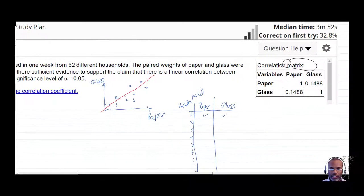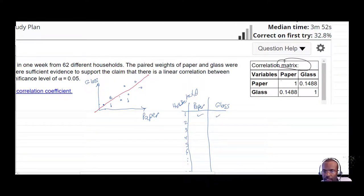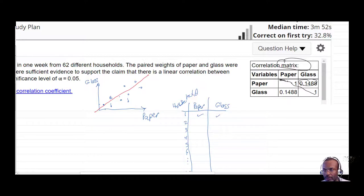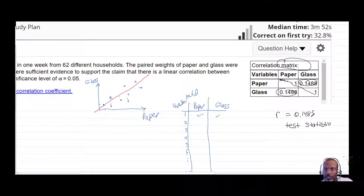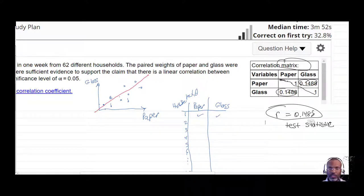All of that is just to say that the weights for paper will always correlate perfectly with themselves — it's one-to-one — and the matrix will be symmetrical. The value 0.1488 appears on both sides, simply meaning that given our two variables, the correlation coefficient is 0.1488. That is what we're going to take as our test statistic. There will always be ones on the diagonal, and the test statistic is the correlation coefficient itself from the 62 different values.